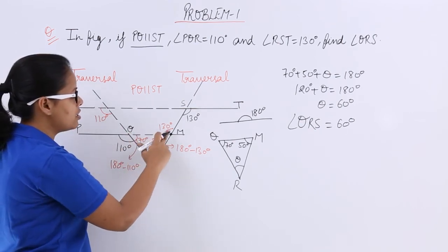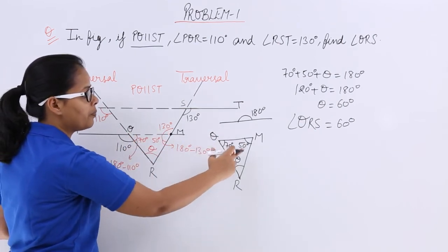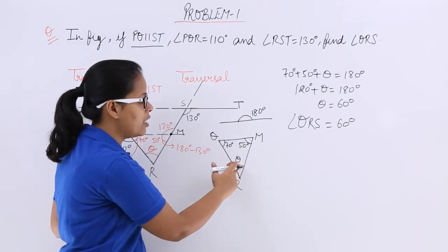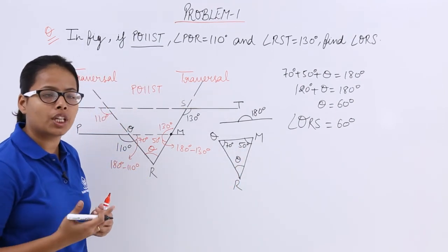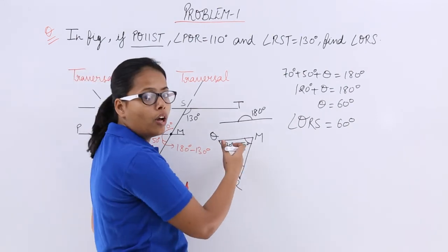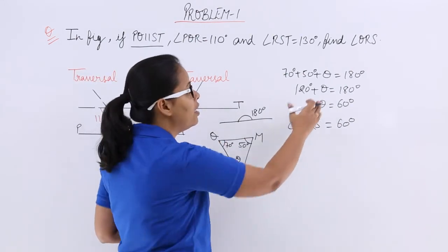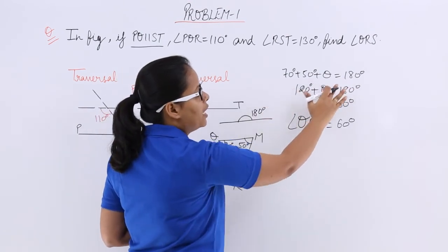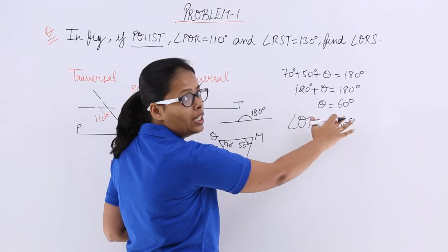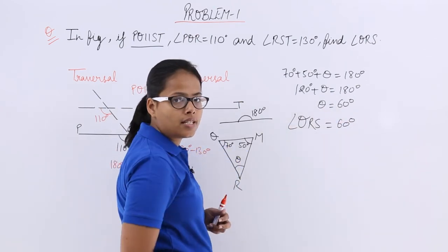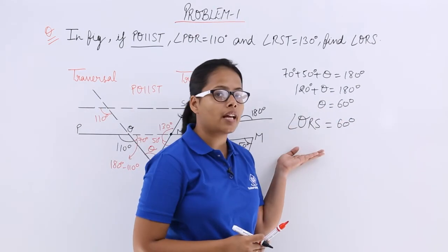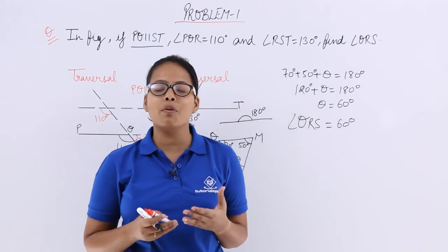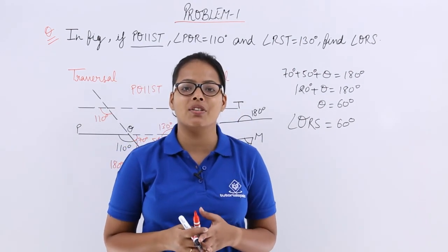So now you can see this is making a triangle. This angle is 70 degrees, this is 50 degrees, and you need to find the value for theta. The sum of all interior angles in a triangle is always equal to 180 degrees. I equated this sum with 180 degrees and solved for theta, which comes out to be 60 degrees. So the angle QRS is 60 degrees. I will be taking more problems in the next video lecture. Thank you.